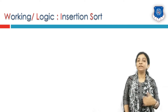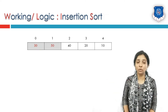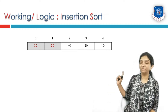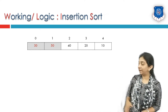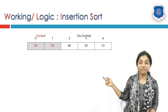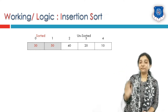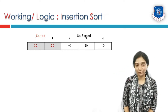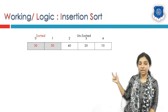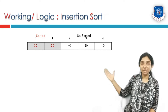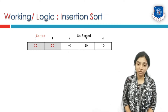Let us see the working, or we would say the logic, of insertion sort. Consider this is the current scenario of insertion sort. This is not the very first look of the algorithm — it is taken from somewhere in the middle, where the highlighted elements 30 and 50 are sorted, whereas 40, 20, and 10 on the right half of the array are unsorted. We have to pick up the first unsorted element, which is 40, and try to insert it between 30 and 50 in its correct location.